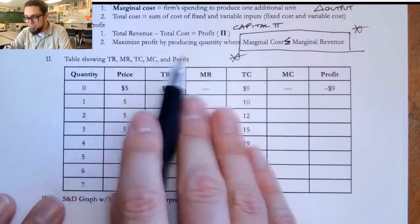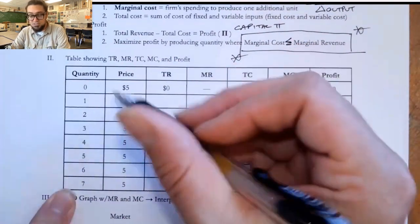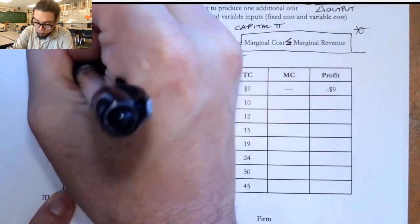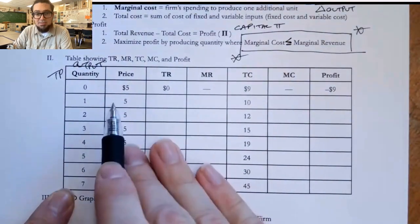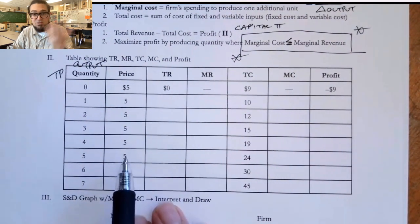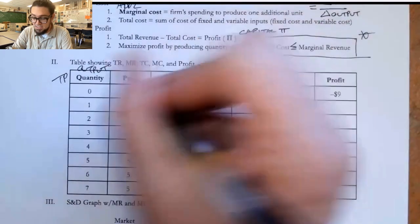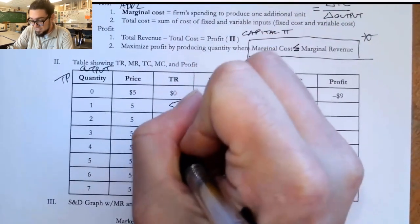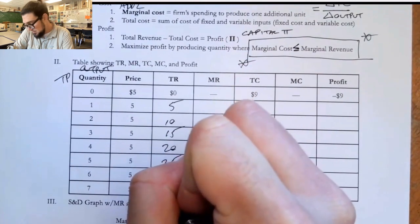So let's get started on this table showing TR, MR, TC, MC, and profit. And notice the quantity of units. This is the output column. So I'm just going to put output. You can also call this total product. And the price of the good is going to be five bucks for every single unit. We're not going to change the price every single time. And so the total revenue is just price times the quantity. We've got five, 10, 15. I think you could do the rest here, 35.